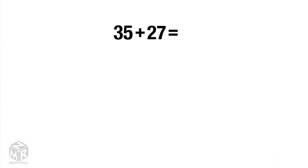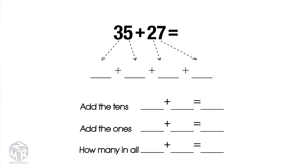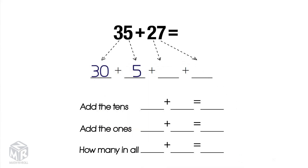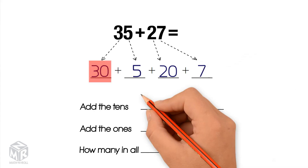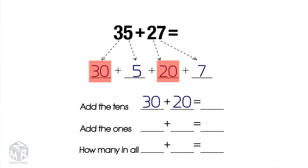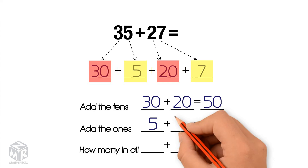Let's try another example: 35 plus 27. 35 breaks apart into 30 and 5. 27 breaks apart into 20 and 7. Now we add the tens: 30 plus 20 equals 50. Now we add the ones: 5 plus 7 equals 12.